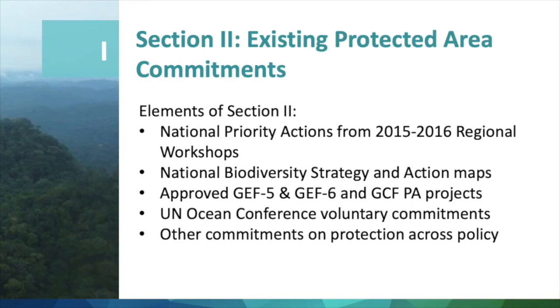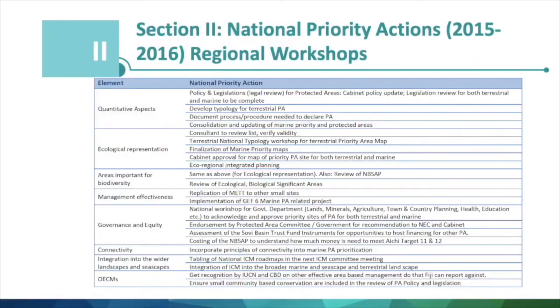Section 2 of the dossiers shifts to present the existing relevant protected area commitments. Elements of Section 2 include the national priority areas, national biodiversity strategy and action plans, approved GEF-5 and GEF-6 protected area projects, GCF protected area projects, UN Ocean Conference voluntary commitments, and other commitments related to protected areas. The dossiers begin by presenting the national priority actions as captured from the 2015–2016 regional workshops. These priority actions include actions for multiple protected area elements including quantitative aspects, ecological representation, areas important for biodiversity, management effectiveness, governance and equity, connectivity, integration into wider landscapes and seascapes, other effective conservation measures, and other identified opportunities.